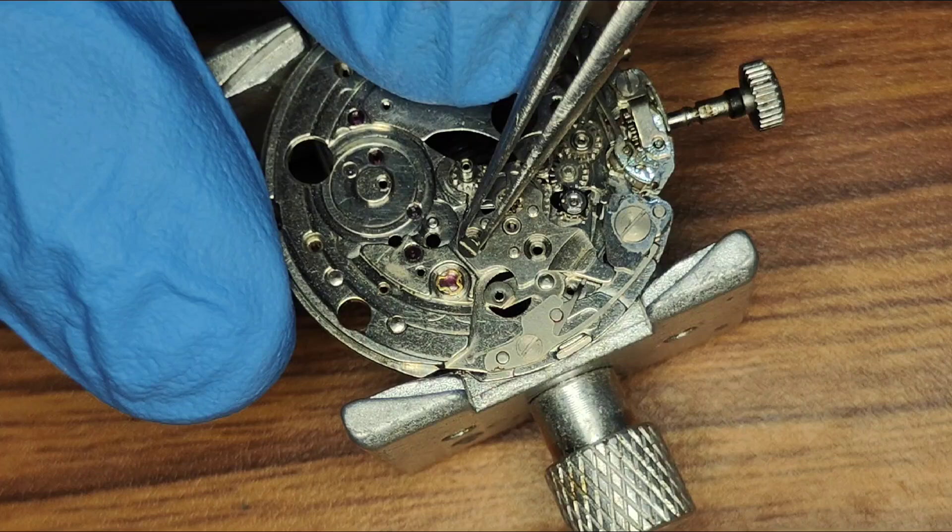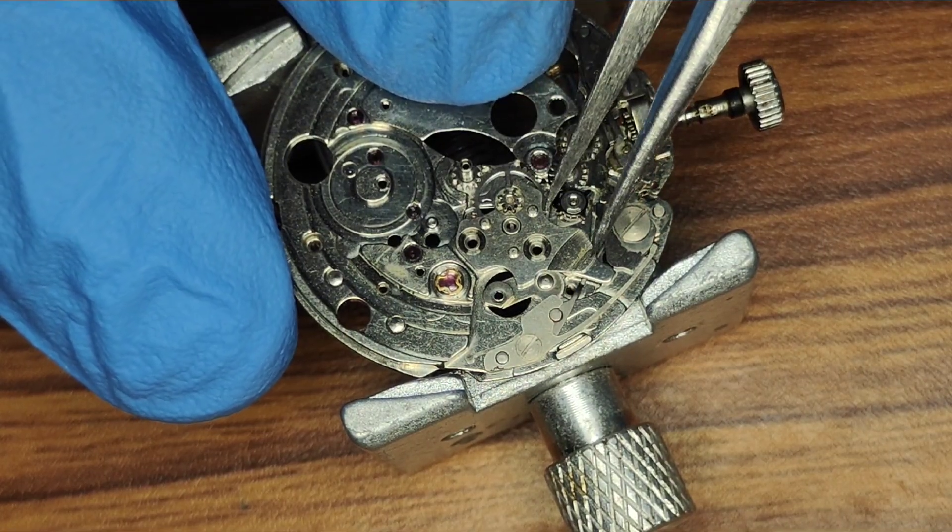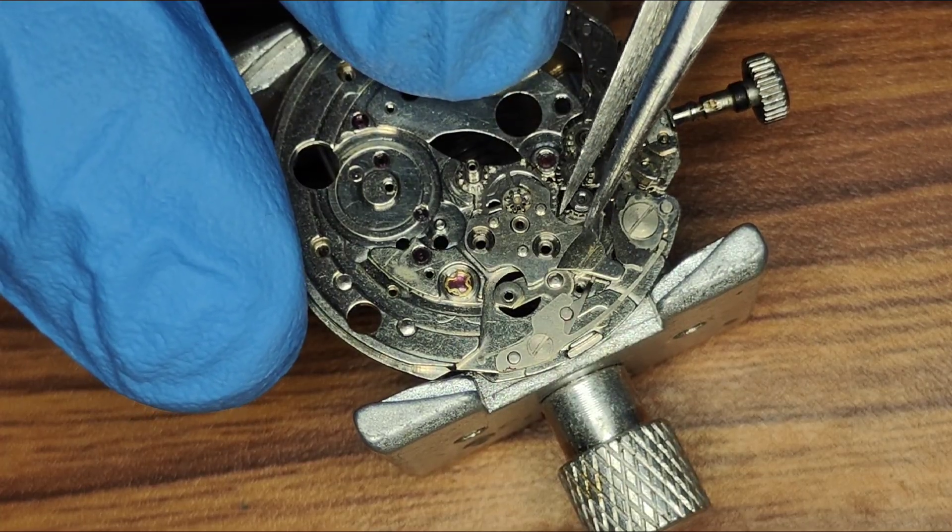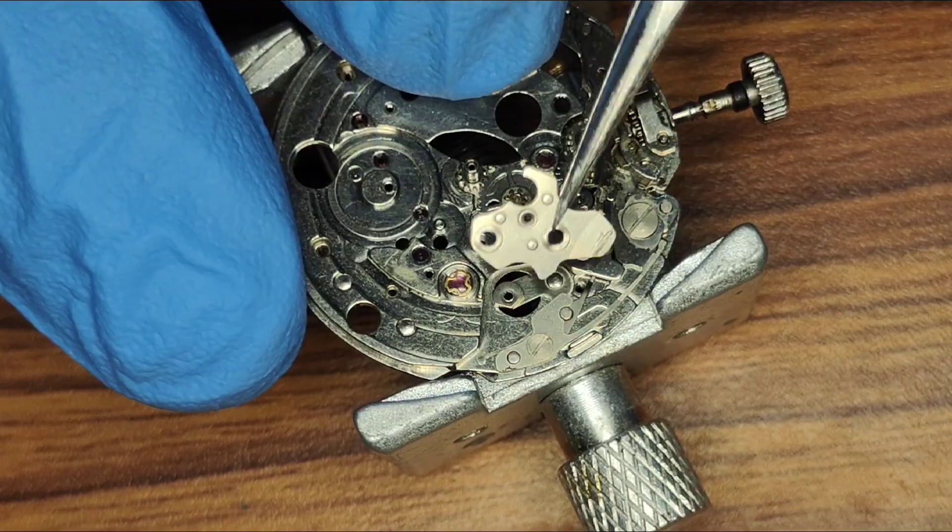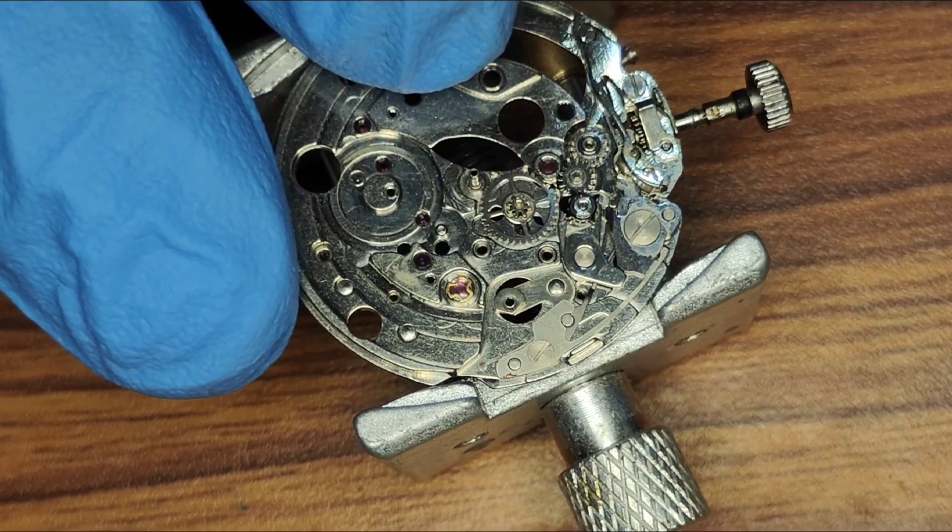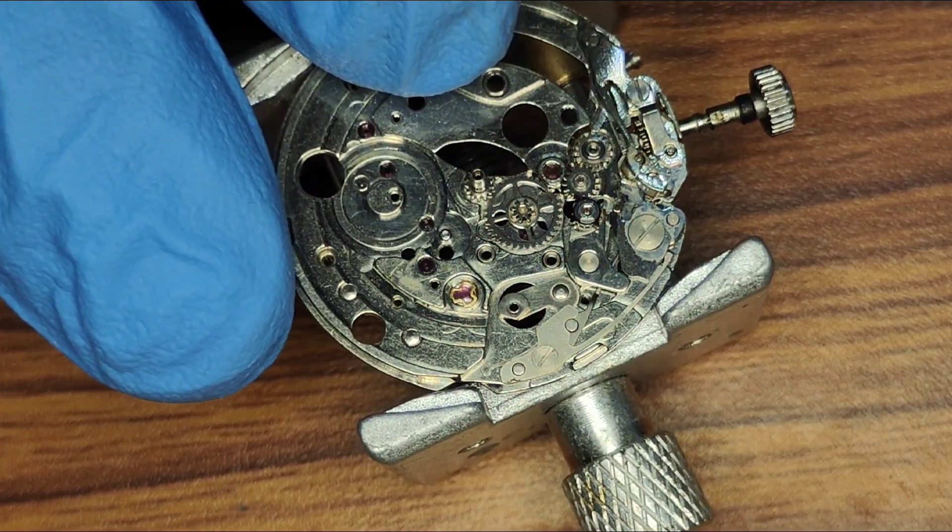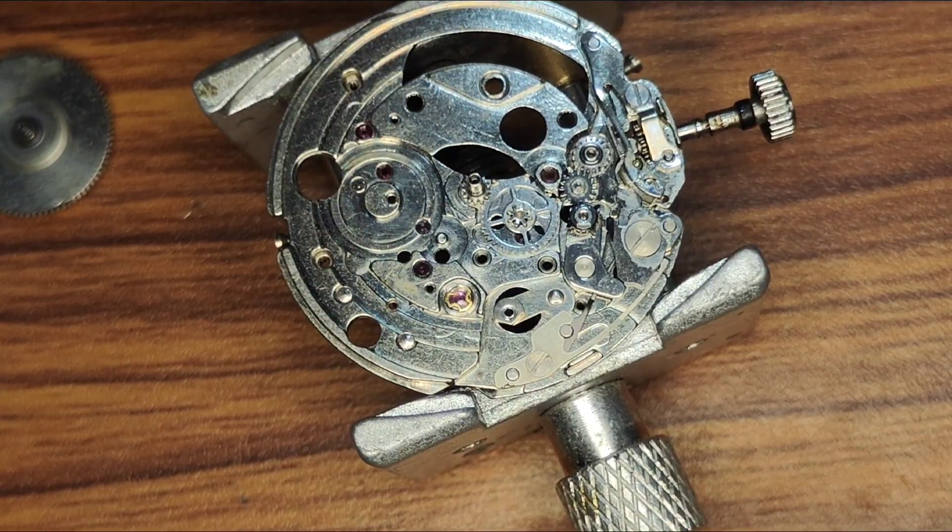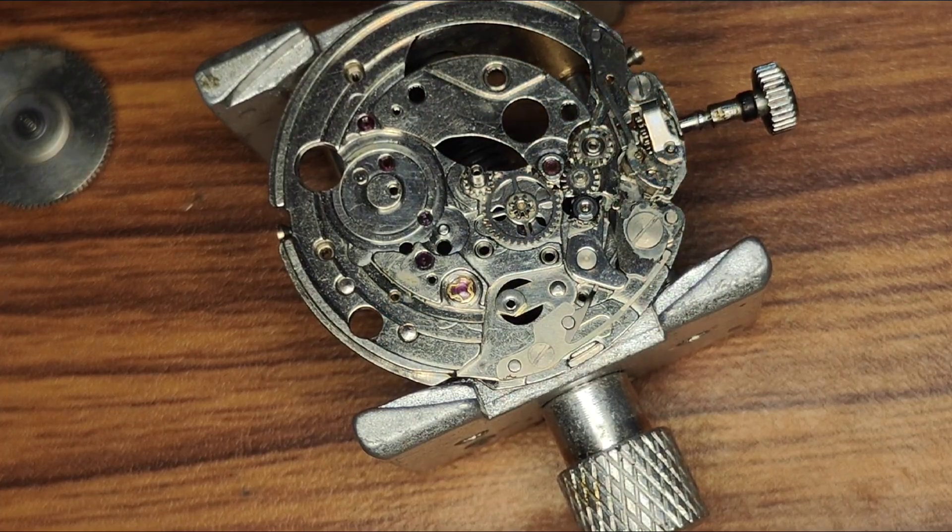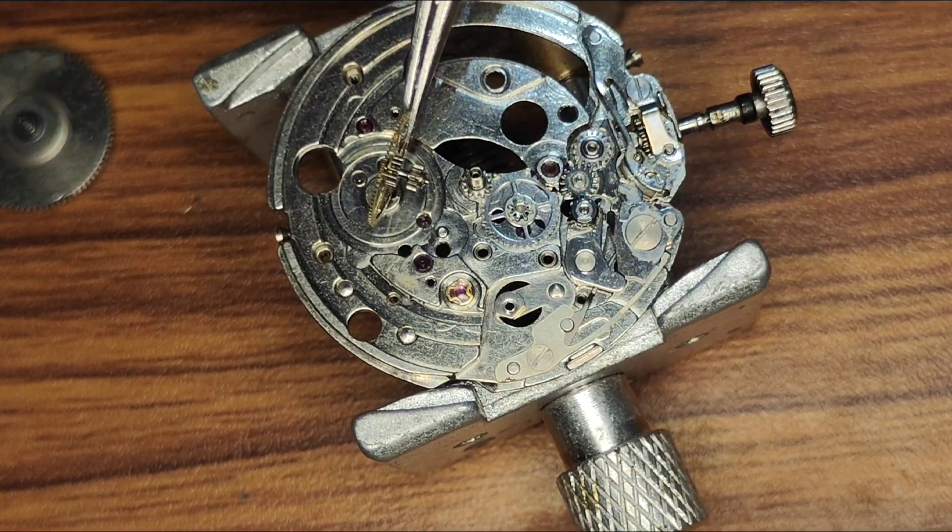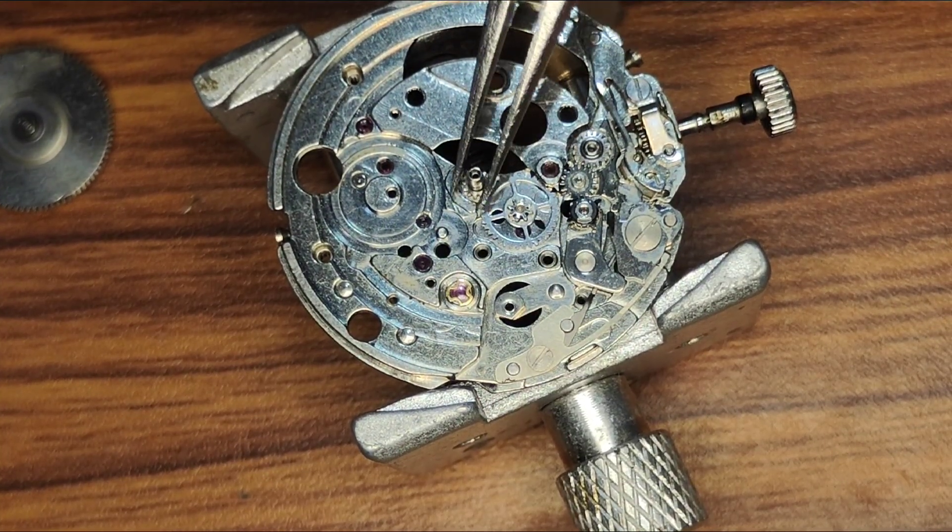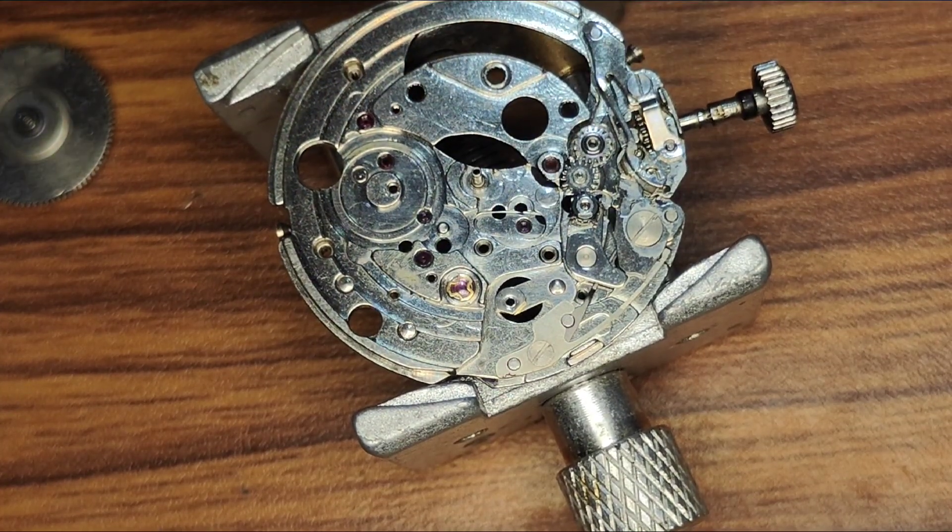Now I will remove the minute wheel guard. Now I will remove the second cannon pinion. As I said earlier, this movement has a side cannon pinion. So there will be a small spring underneath the minute wheel. And it is not recommended to remove it.